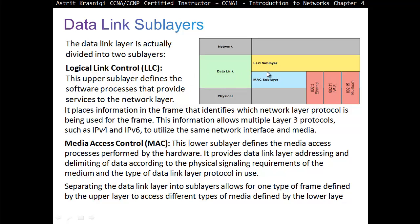The LLC upper layer defines the software process that provides services to the network layer. It places information in the frame that identifies which network layer protocol is being used. This allows multiple Layer 3 protocols such as IPv4 and IPv6 to utilize the same network interface and media. Media Access Control or MAC Layer, the lower sublayer, defines the media access process performed by hardware. It provides Data Link Layer addressing and delimiting of data across physical signaling requirements. Separating the Data Link Layer into sublayers allows one type of frame defined by the upper layer to access different types of media defined by the lower layers.